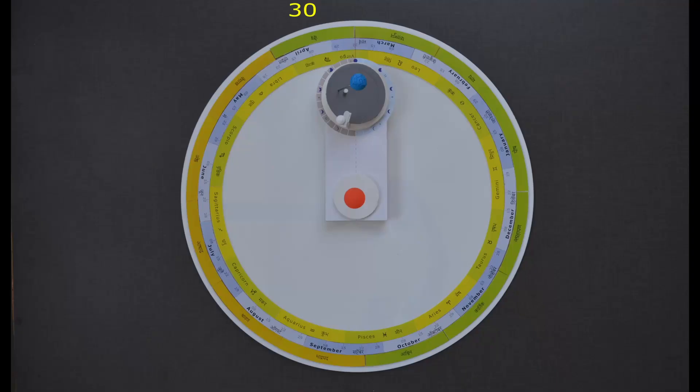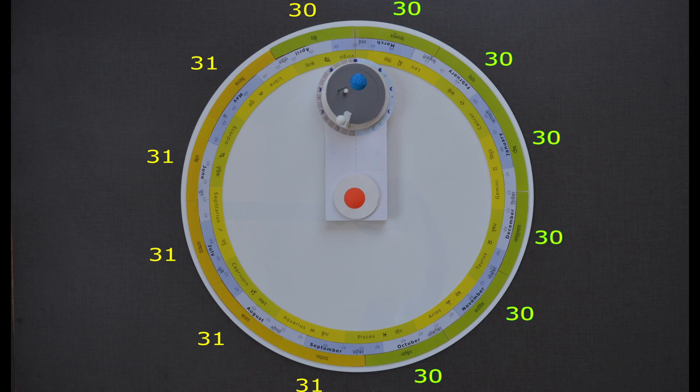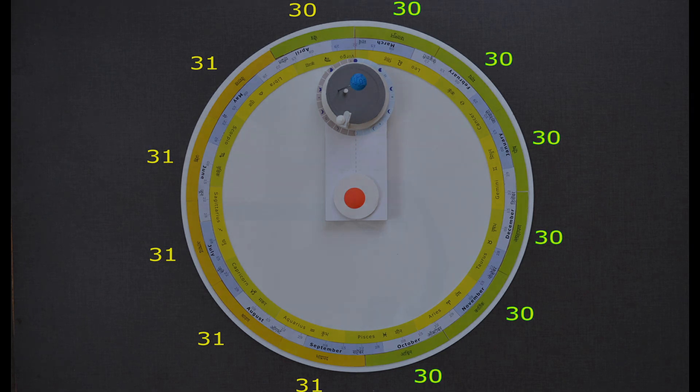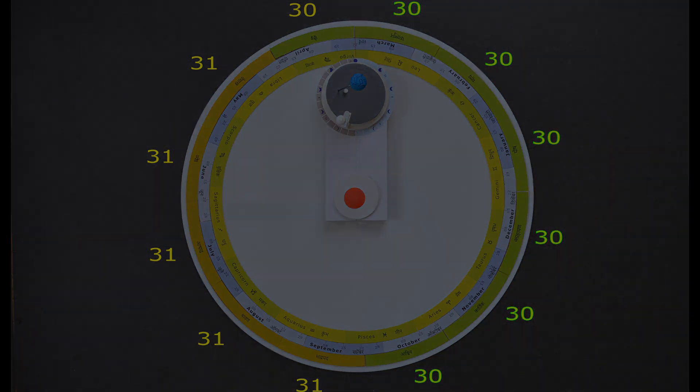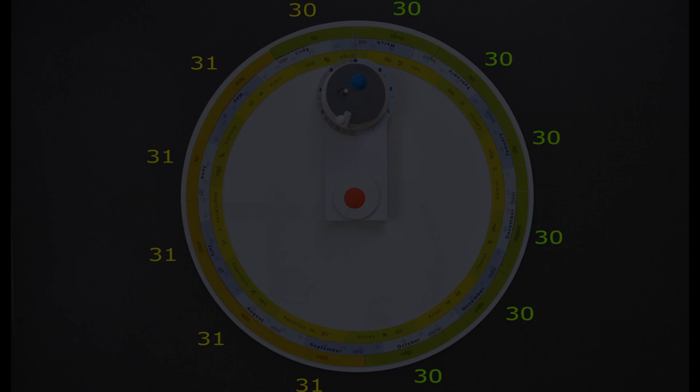First month, that is Chaitra, has 30 days, while the next 5 months have 31 days. Remaining months are 30 days each. Each month has a fixed start date associated with the Gregorian calendar. Let's have a closer look.